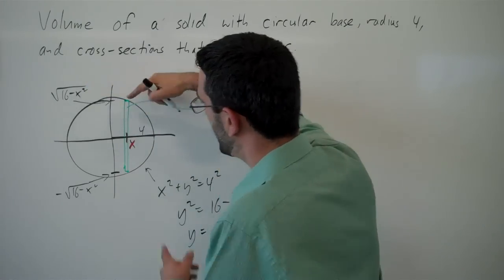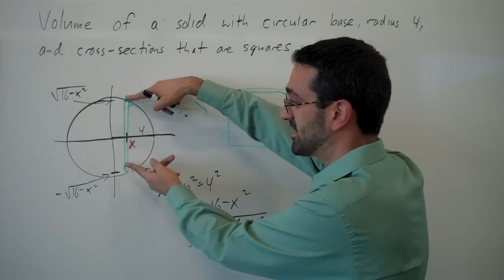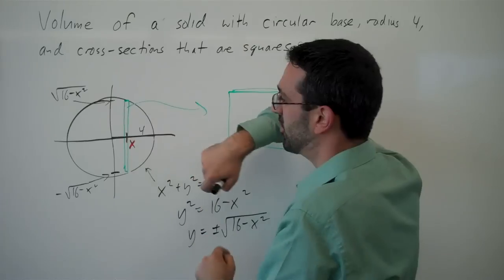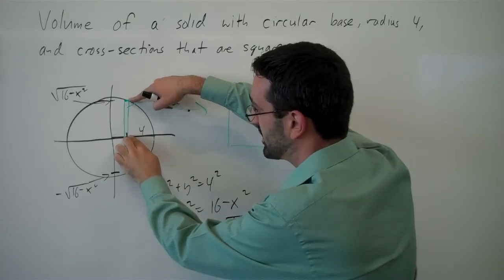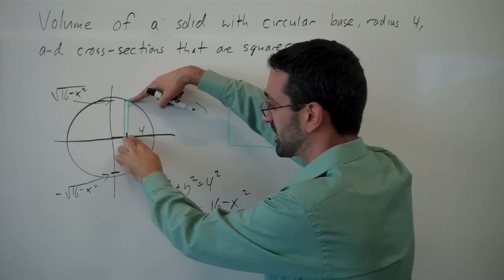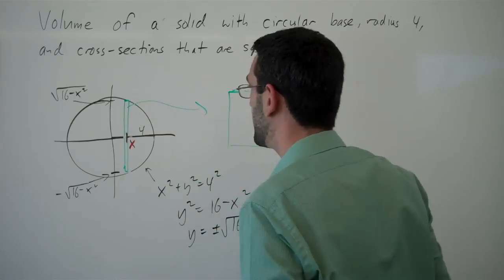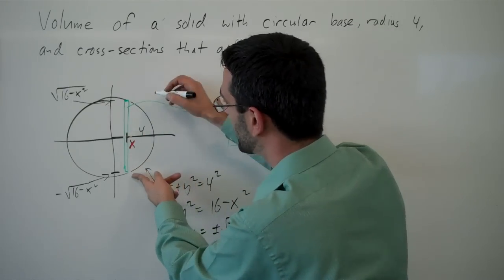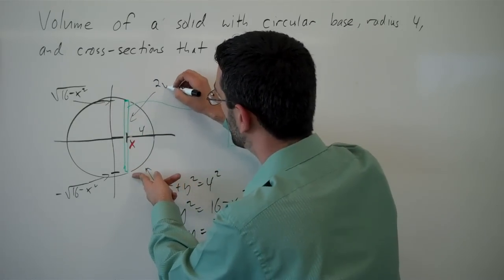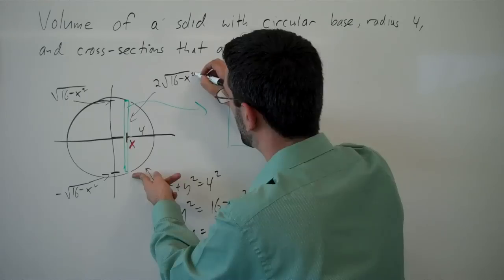And the total height, then, is the difference between those. Or you could also think of it as, this height is root 16 minus x squared. This is the same. And so this entire height will be 2 square root of 16 minus x squared.